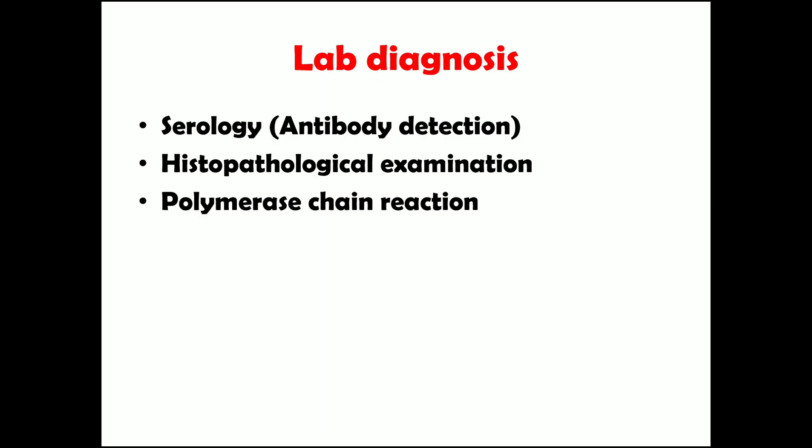Lab diagnosis is discussed under three main headings. First, serology — detecting antibodies in the patient's blood. Second, histopathological examination — injecting the patient's sample into cell lines, eggs, or animals such as guinea pigs and observing bacterial growth. Third, polymerase chain reaction.